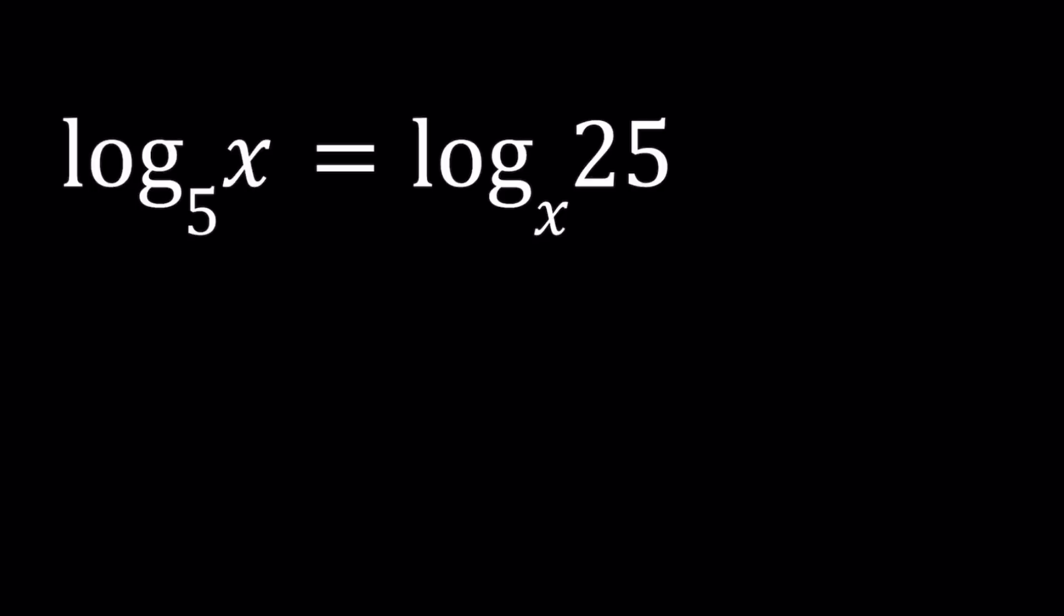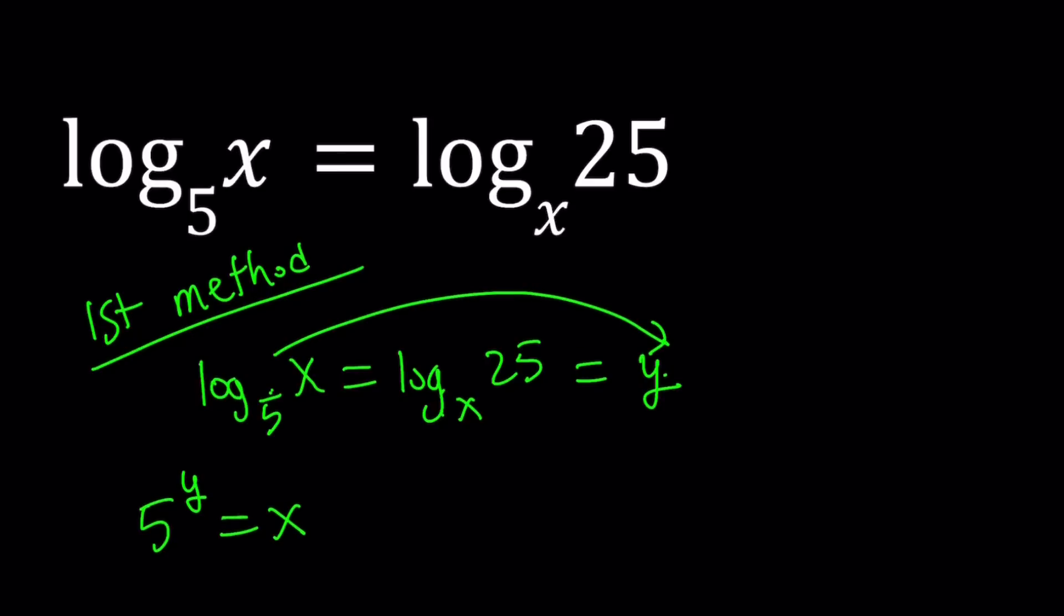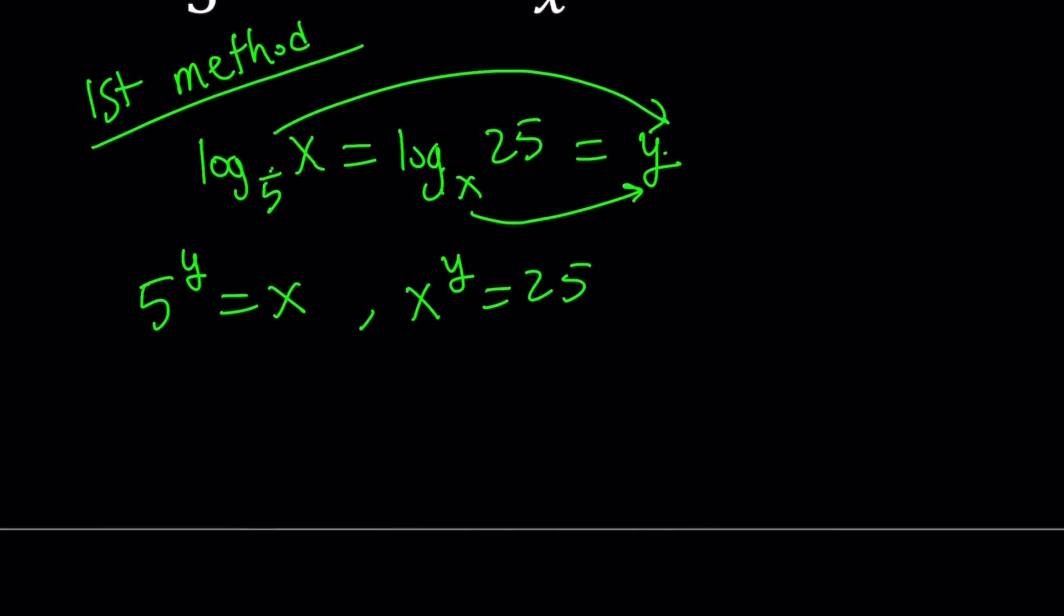Let's start with the first method. For my first method, I'm going to set both of these equal to another variable. So let's go ahead and set both of these equal to y. And now from here, we're going to get the following by using definition of logarithms. We're going to start at the base 5, and then go to y. So write it as 5 to the power y equals x. That is my first equation. And my second equation is going to give me x to the power y equals 25. Just look up the definition of logs and you're going to get it.